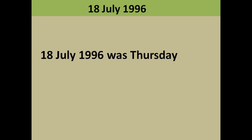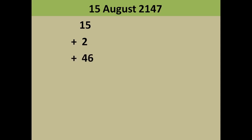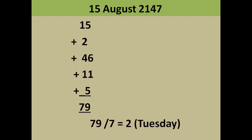Let's now do it mentally: 15th August 2147. Date = 15, code of month August = 2, last two digits minus 1 = 46, quotient of 46 divided by 4 = 11, code of century for 2100 = 5. Adding all: 15 + 2 + 46 + 11 + 5 = 79. Dividing 79 by 7 gives remainder 2, so the day is Tuesday.